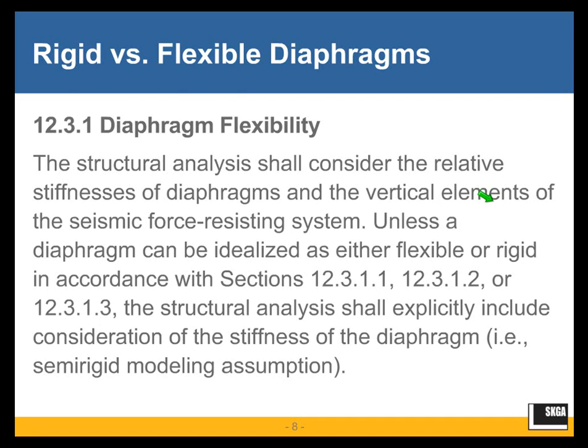Unless a diaphragm can be idealized as either flexible or rigid, the structural analysis shall explicitly include consideration of the stiffness of the diaphragm — the semi-rigid modeling assumption. So, unless your diaphragm is flexible, which can be prescriptively flexible or flexible by calculation, or rigid, which can be only prescriptively rigid, you shall consider semi-rigid diaphragms in your analysis, and that really complicates the analysis.